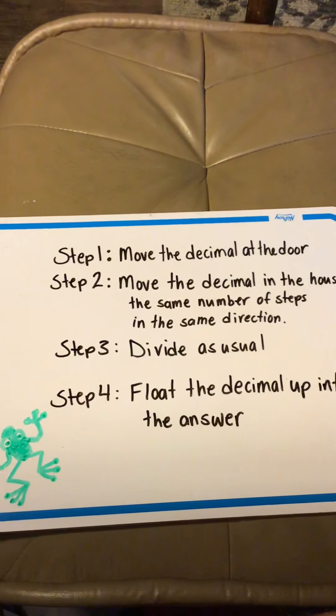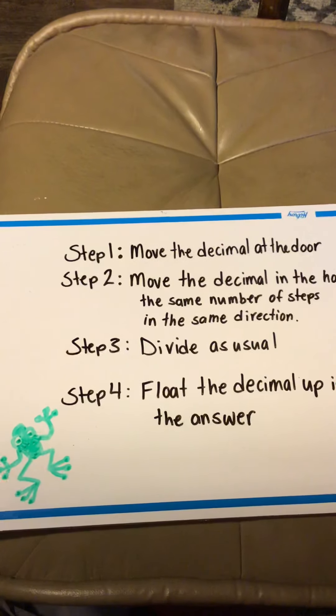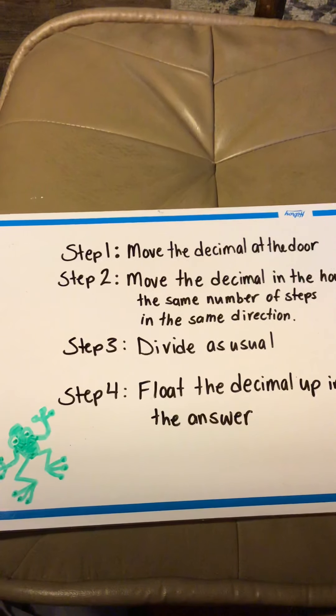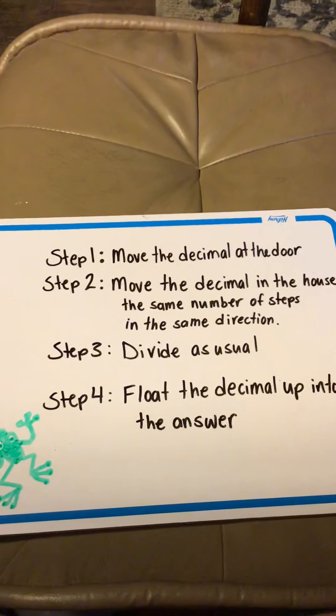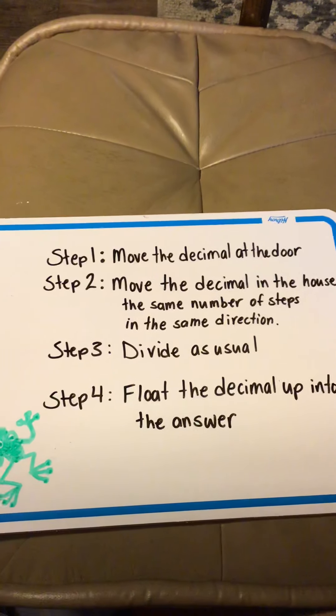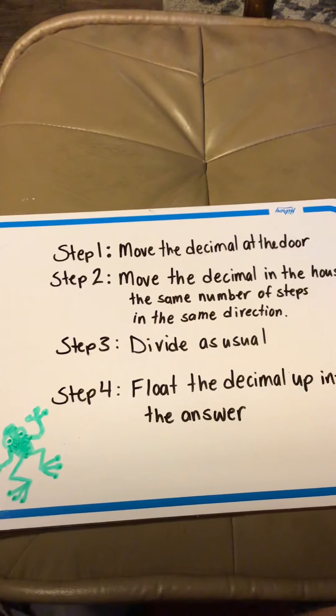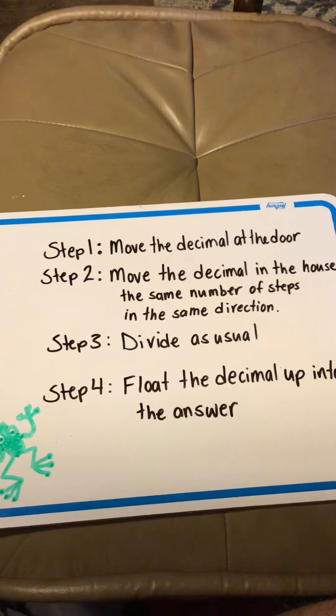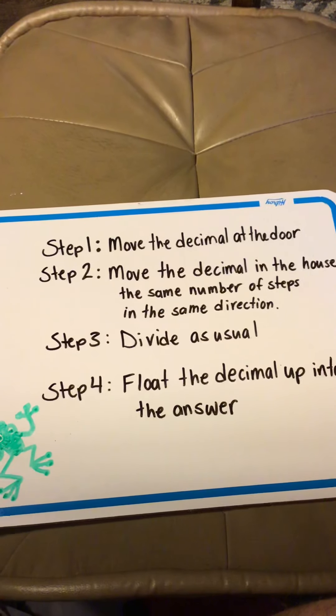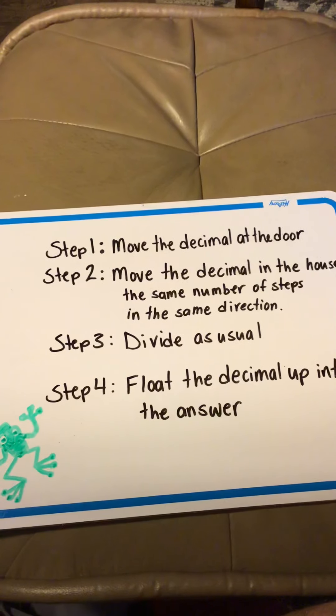Step number 3. Divide, just like usual. Daddy fish divides, mommy fish just multiplies, sister fish subtracts, brother fish brings down. Final step, once we finish the whole thing, is we float the decimal up into the answer. And if we've done a good job of putting our answers on the roof, it's going to be in just the right place to make sense as our answer.